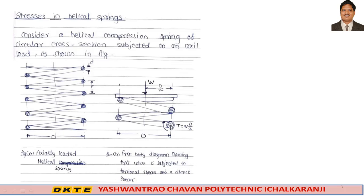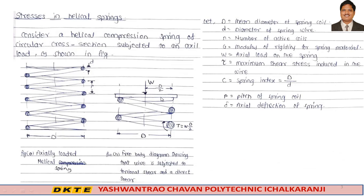For a single wire, there is torsional shear — this is the twisting moment T equals force W into distance D by 2. Let: capital D be the mean diameter of spring coil, small d be the diameter of spring wire, small n be the number of active coils, G be the modulus of rigidity for spring material, W be the axial load on the spring, tau be the maximum shear stress induced, spring index C equals capital D upon small d, P be the pitch of the spring coil, and delta be the axial deflection of spring.